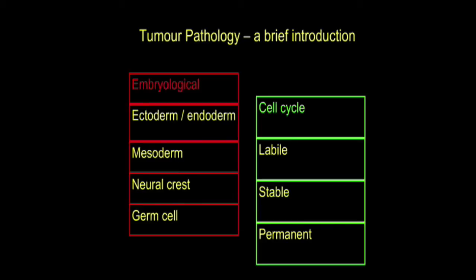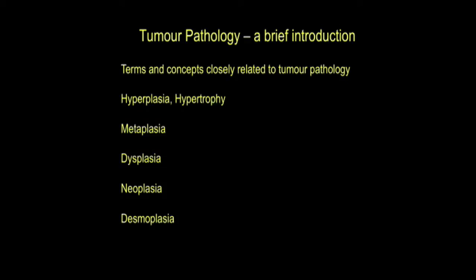Finally, there is the stable cell group, which is somewhere in between. This is a cell population that doesn't normally divide but hasn't forgotten how to do so. If circumstances change and the cells need to be kicked into mitotic activity and division, they can do so. A good example is the liver, where regenerative change is quite dramatic when needed. In liver surgery, you can take away a large part of the liver, and six or eight weeks later a scan shows the liver has largely grown back in volume, though with an odd shape.